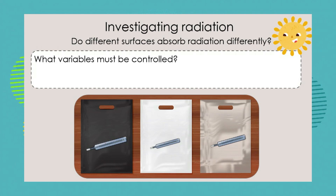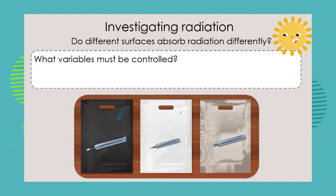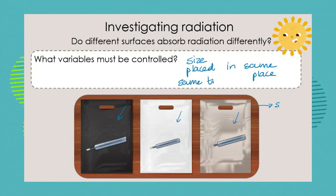What variables must be controlled? Remember in a scientific investigation, all other variables must be the same — we only vary one variable, which in this case is the colour of the bag. The size of the bags must be the same. They're all going to be placed in the same spot — we're not going to put one bag in the shade and one in the sun. They're going to be kept for the same amount of time in the sun. We control all these other variables very carefully.